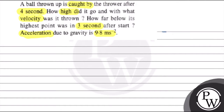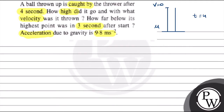In this question, a person is throwing a ball upward with some velocity. It goes up to the top height where final velocity is 0. Then it comes back down to the ground. The total time to return to the ground is 4 seconds.